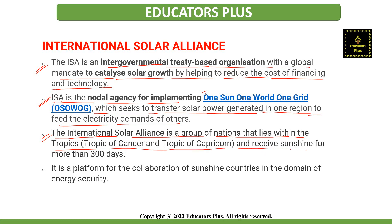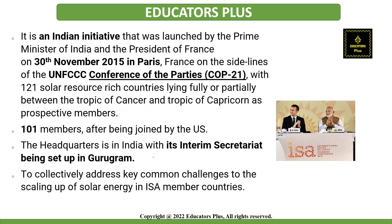Basically, the International Solar Alliance is a group of nations that lies within the tropics — the Tropic of Cancer and the Tropic of Capricorn — and they receive sunshine of more than 300 days. It is a platform for the collaboration of sunshine countries in the domain of energy security.